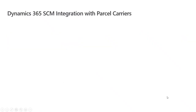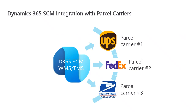What this looks like in more of an infographic view is that we've got our Dynamics 365 Supply Chain Management business application, and specifically we're going to be talking through the warehouse management and transportation management configurations required to enable this. We've got XML messages that are sent and received between Dynamics and the parcel carrier APIs — examples include major US parcel carriers like UPS, FedEx, the Postal Service, DHL, and others.